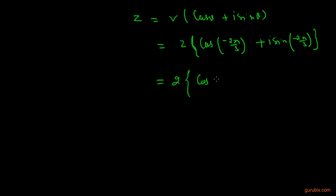We can write this expression as 2 times cos 2 pi by 3 minus iota sin 2 pi by 3, because cos minus theta is positive cos theta, and sin minus theta is minus sin theta. So this is the solution of the given example.